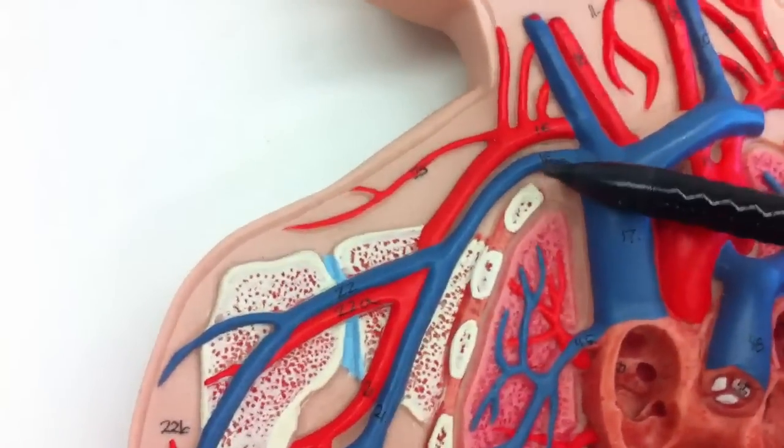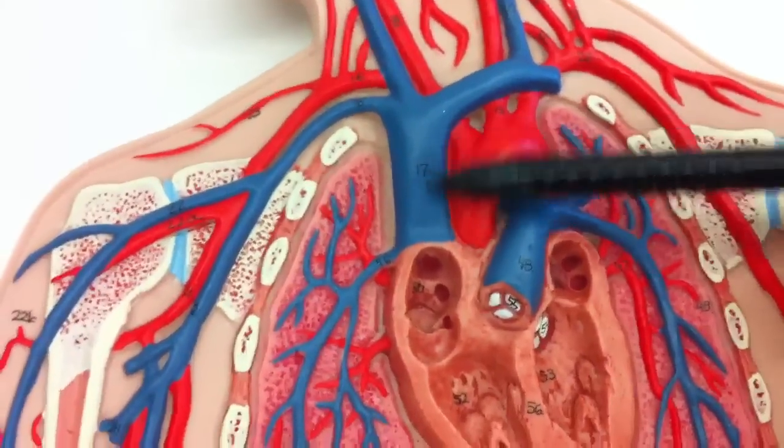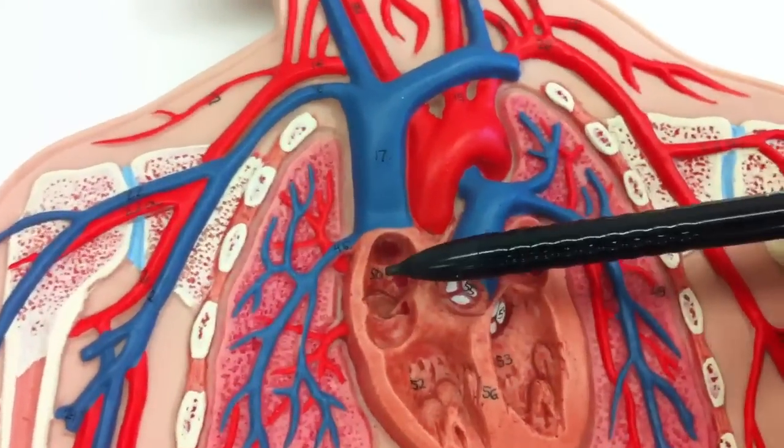And then come here to the right subclavian, empty into the superior vena cava, and into the right atrium.